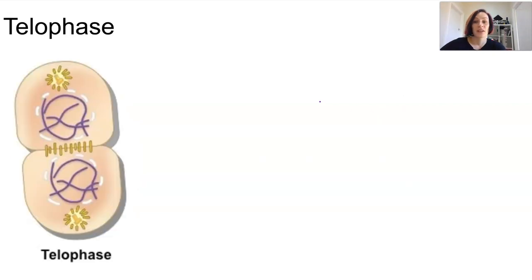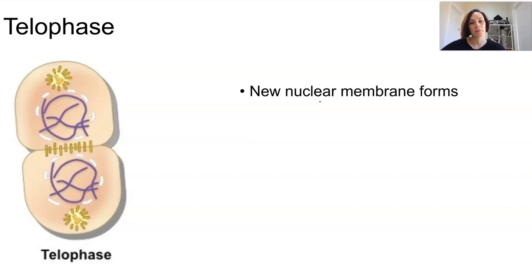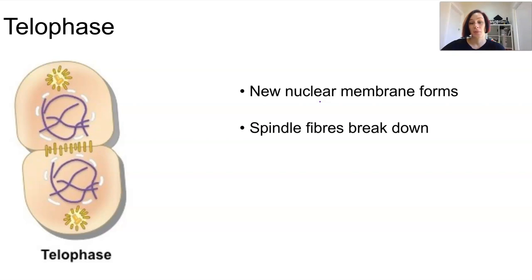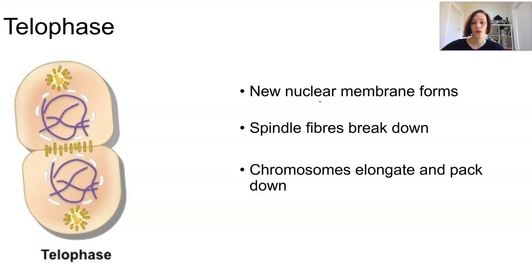In telophase, the final phase, a new nuclear membrane begins to form around all the chromosomes at each end of the cell. The spindle fibers start to break down as they're no longer needed, and the chromosomes become longer, thinner, and less visible, ready to be packed down into each new cell.